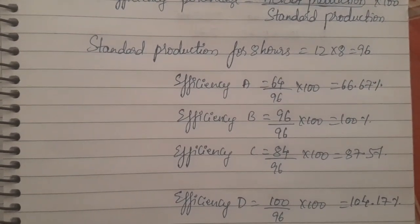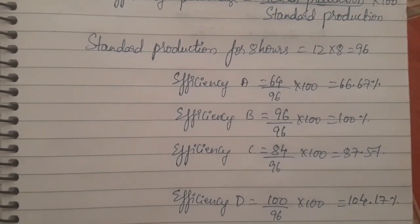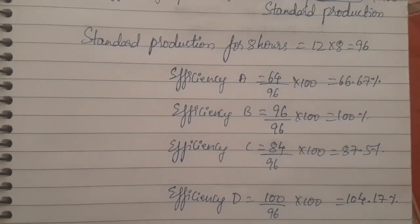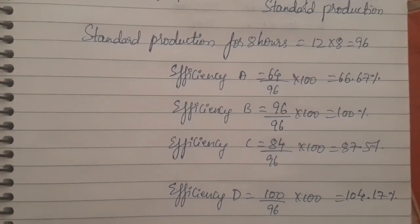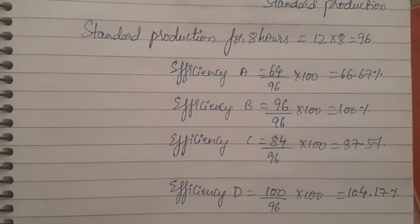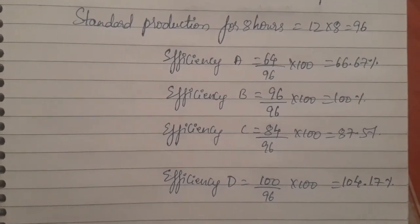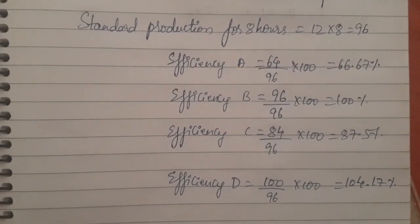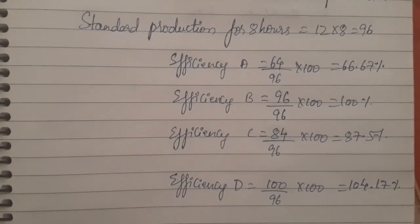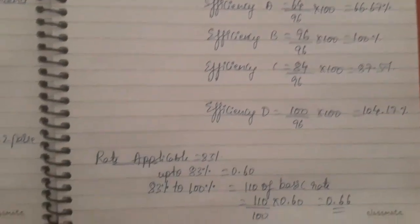Efficiency of worker A = 66.67 percent. Efficiency of worker B = 96 ÷ 96 × 100 = 100 percent. Efficiency of worker C = 84 ÷ 96 × 100 = 87.5 percent. Efficiency of worker D = 100 ÷ 96 × 100 = 104.17 percent.